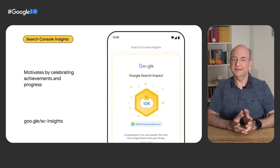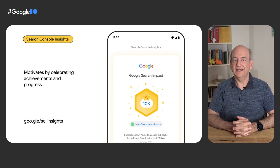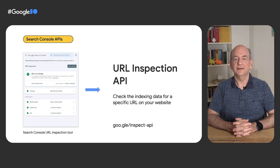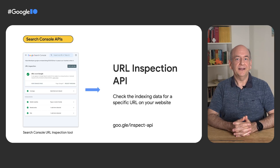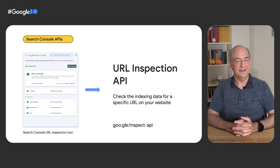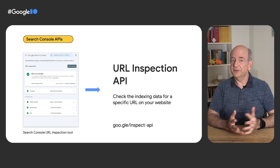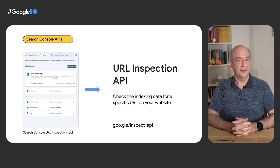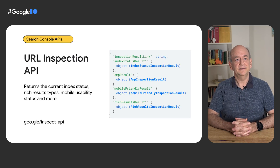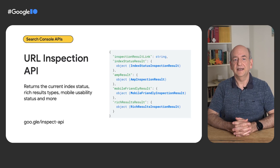Shifting gears, let's move on to the other new API, the URL Inspection API. With this new API, developers can check the indexing data for a specific URL on their website. This API maps to the URL Inspection tool in Search Console. The API response includes, among other things, the current indexing status, any structured data detected, and its mobile usability status.